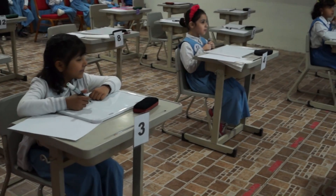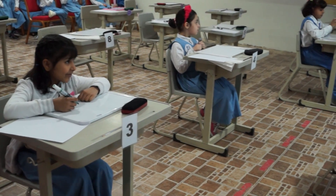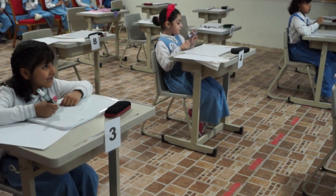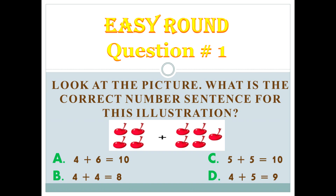What is the correct number sentence for this illustration? Look at the picture. What is the correct number sentence for this illustration? A: 4 plus 4 equals 10? A: 4 plus 6 equals 10?